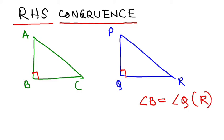Now, what is the hypotenuse? In case of ABC, hypotenuse is the side opposite to the right angle. So your hypotenuse is AC. I will have AC is equal to what is the hypotenuse here? PR. AC equal to PR.